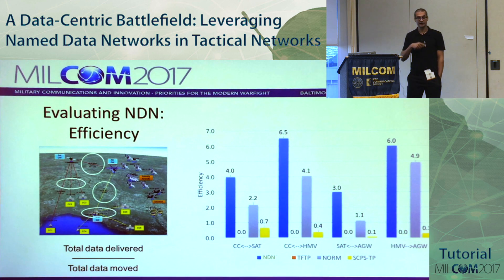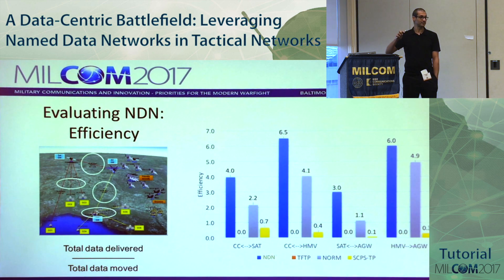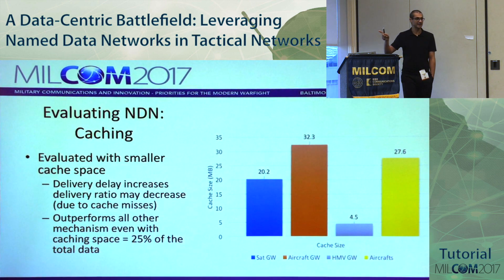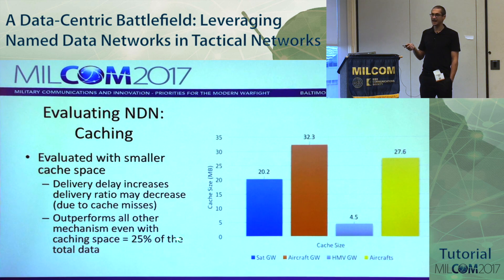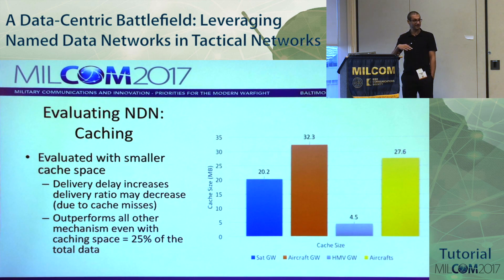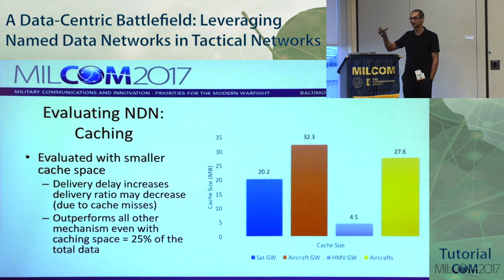On cache sizes: we ran three scenarios — caches large enough for all data, 50% of total data, and 25% of total data. Even with only 25% of the data in cache, NDN still outperformed everybody. The efficiency improvement held: we delivered more while moving less. The caching slide showed how much data was in caches at end of scenario across the satellite node, aircraft gateway, Humvee gateway, and all aircraft combined — and cutting that to 25% still showed clear wins.